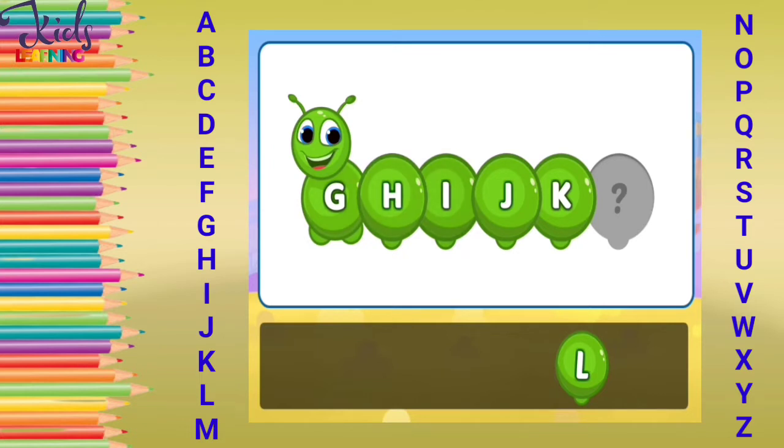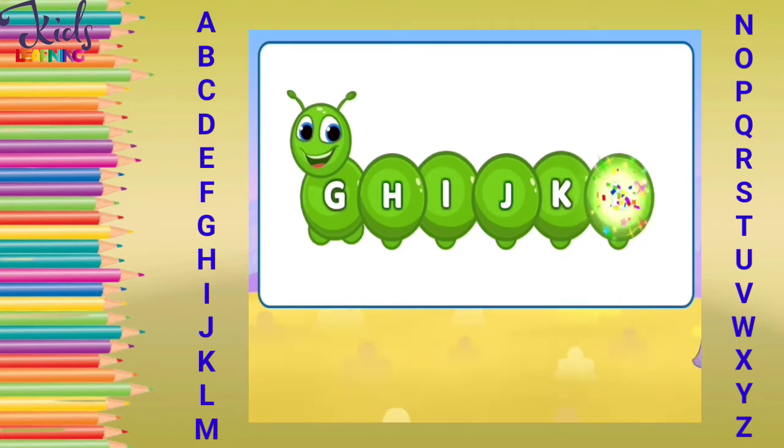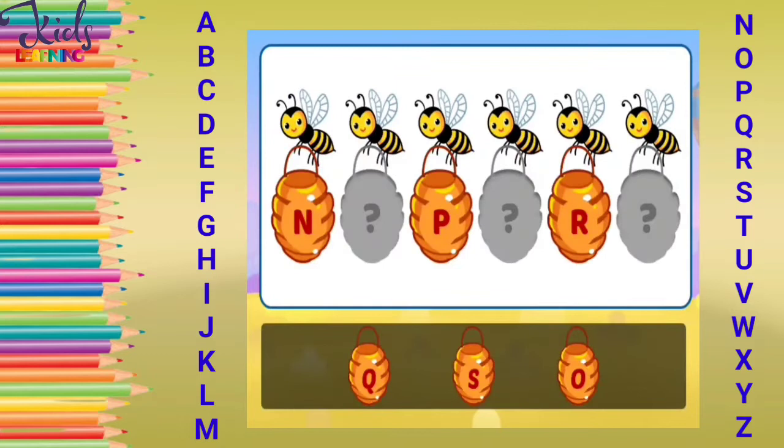G, H, I, J, K. Now what comes after K? Yes, it's L. Now find another missing letters.